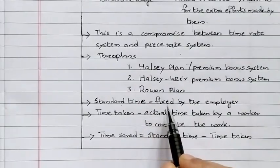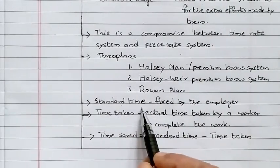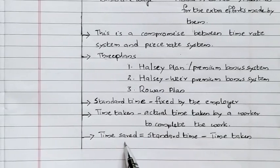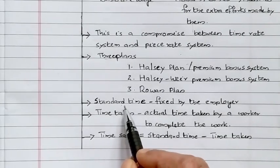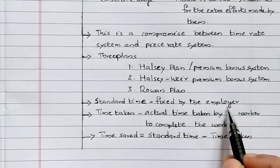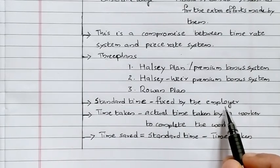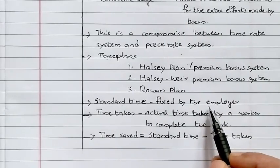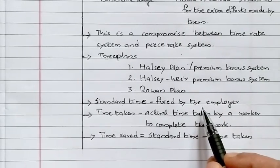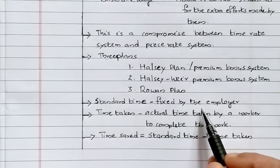In the details of the plan, we will discuss three terms: Standard Time, Time Taken, and Time Saved. Standard Time is the time fixed by the employer — the time allotted to workers for performing the job. It is the time set in the factory within which workers are expected to complete their job.